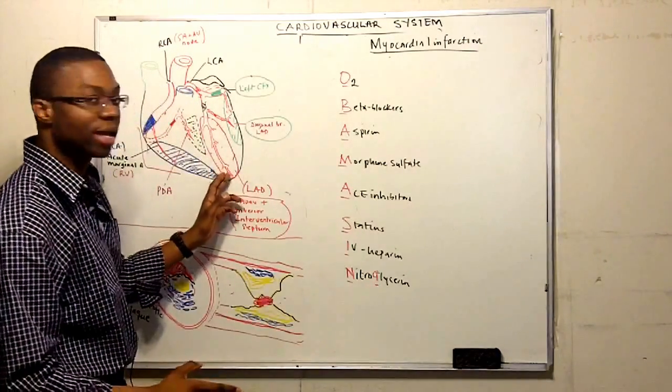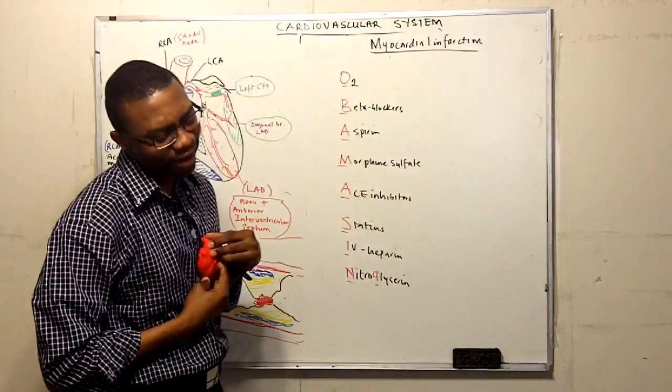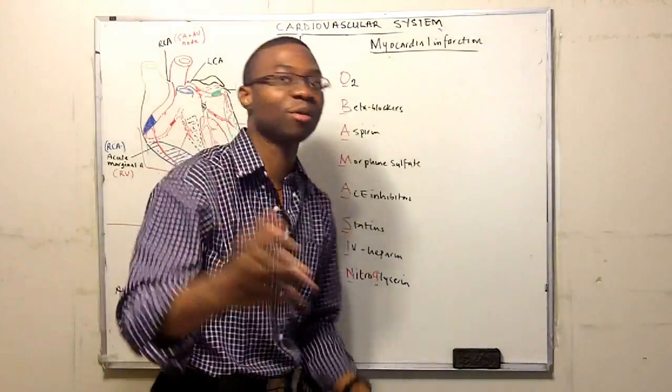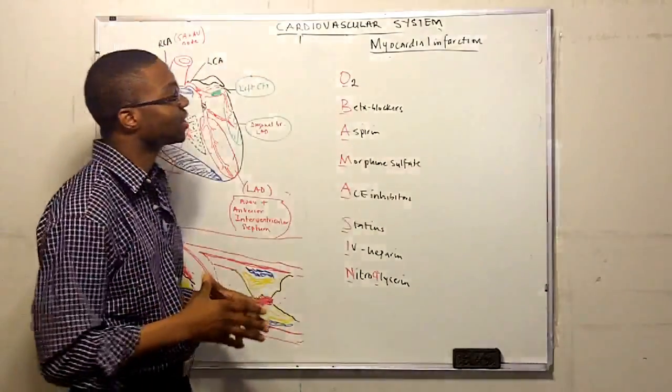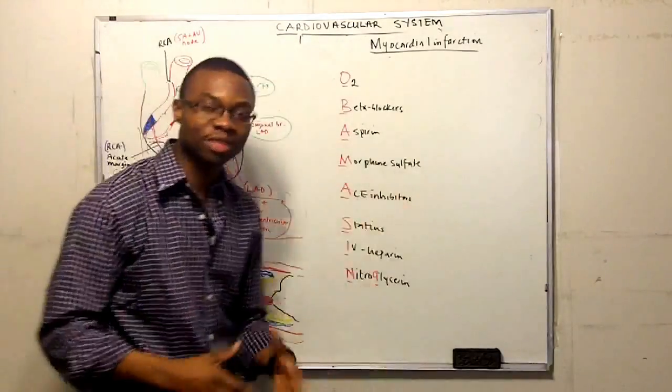Now when you don't have perfusion to any of the tissues, the cute little heart is going to die. When the heart dies, you don't want that, but it does happen all the time, it's the number one cause of death in the United States. So in the hospital, they always give these medications.